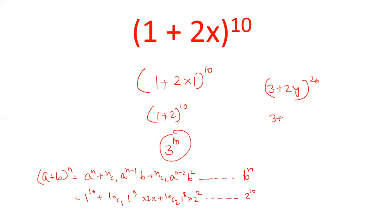So we get (3 + 2·1)^20. 3 + 2 is 5, so 5^20 is the sum of coefficients of the expression (3 + 2y)^20.